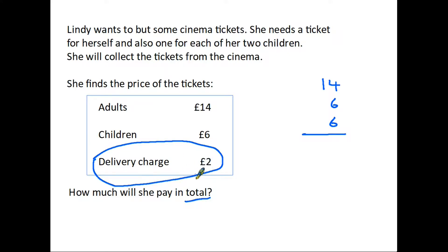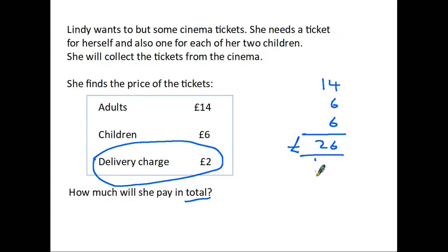So let's add the prices: 4 plus 6 is 10, plus the other 6 is 16. We write down the 6 and carry the 1. In the next column we have 1 and the 1 we've carried, which is 2. So the answer is going to be £26. The important thing is at the beginning of the question you have to decide: are you going to add or are you going to take away? Read the question carefully.